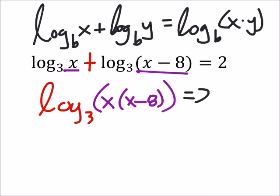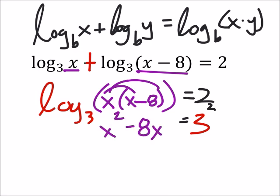And of course this equals 2. So if I want to change this into exponential form, I've got 3 to the power of 2 equals—I'll distribute the x—x squared minus 8x. Now 3 squared, that's going to give us 9, so I'm going to change that.